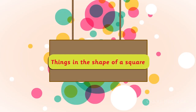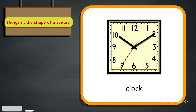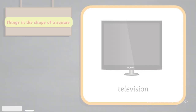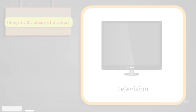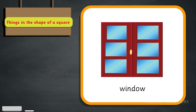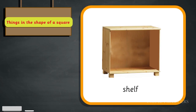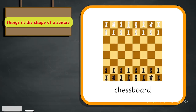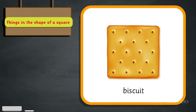Things in the shape of a square: Photo frame, Clock, Television, Window, Plate, Shelf, Chessboard, Pillow, Biscuit.